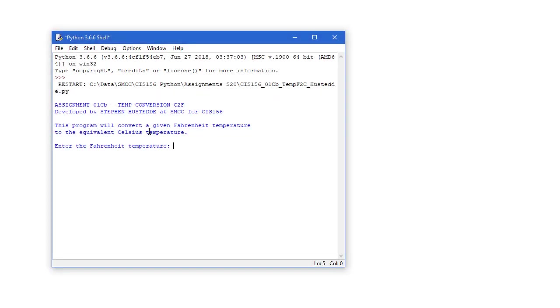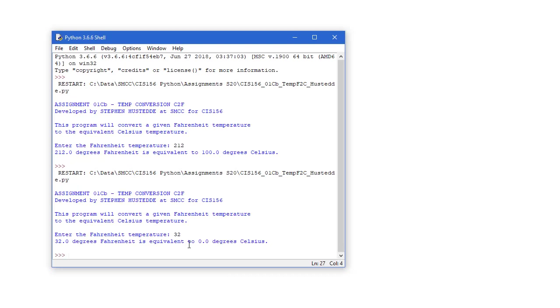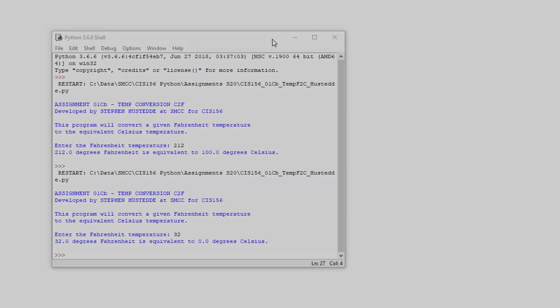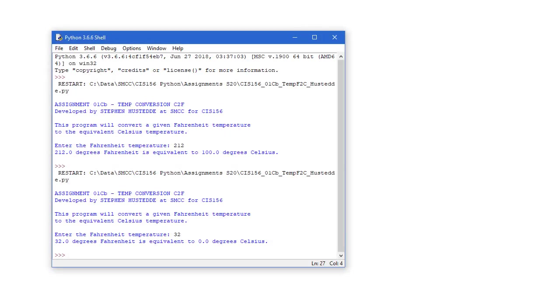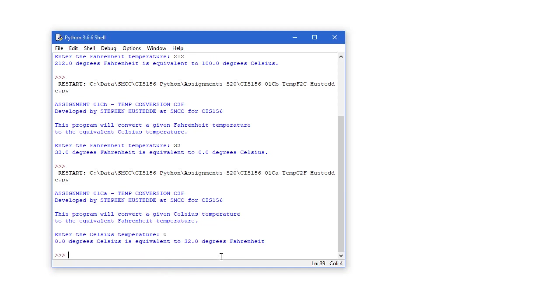So here's one file. This is going to convert a Fahrenheit to a Celsius temperature. Again, if I put in 212, I should get 100 degrees Celsius. I'm going to run this again. And if I put in 32 degrees Fahrenheit, I should get 0 degrees Celsius.